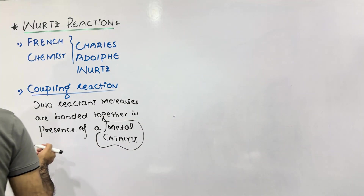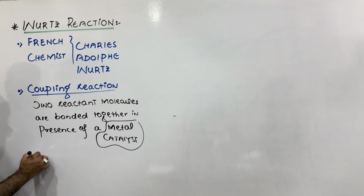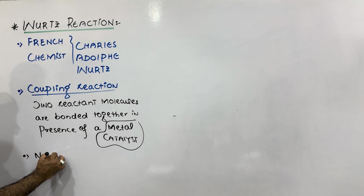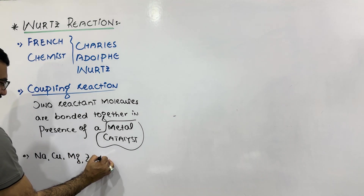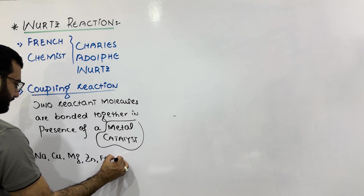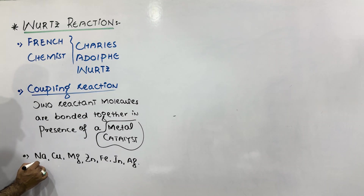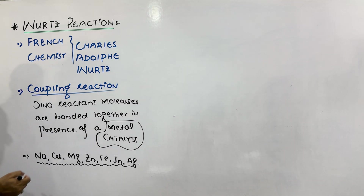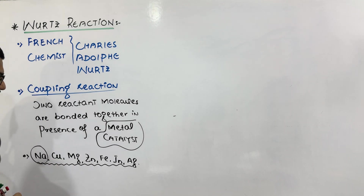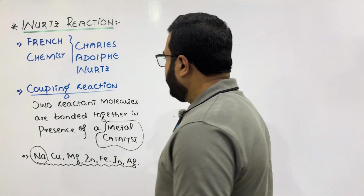What are the metal catalyst options we usually use in the Wurtz reaction? The metal catalysts include sodium, copper, magnesium, zinc, iron, indium, and silver. These are the different options that we can use. Usually in textbooks sodium is mentioned, but activated copper, magnesium, zinc, iron, indium, and silver can also be used.